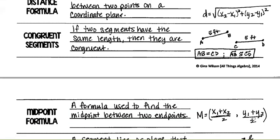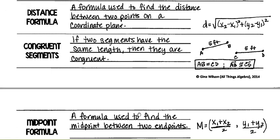Midpoint formula: a formula used to find the midpoint between two endpoints. If I wanted to find the middle of A and B, I plug into the formula — that gives me my x-value and my y-value — giving me the exact midpoint. Just plug and chug.